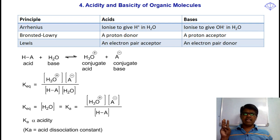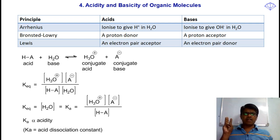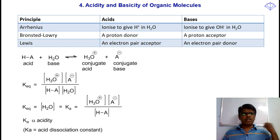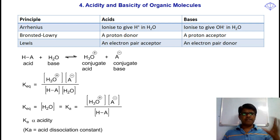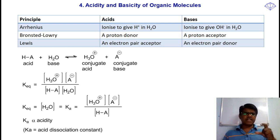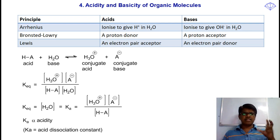And the third theory is Lewis theory. According to Lewis theory, an electron pair acceptor is an acid, whereas an electron pair donor is a base. Dear friends, be clear — Bronsted-Lowry and Lewis acid theories seem to be similar, but they are different. A proton donor is an acid according to Bronsted-Lowry, whereas an electron pair acceptor is an acid according to Lewis theory. This is the difference.